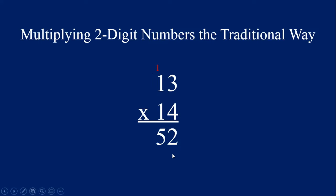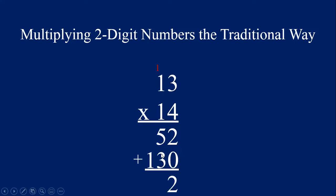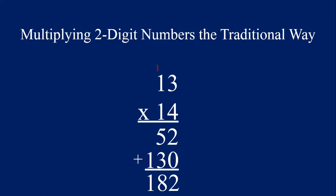Now we need to put a 0 under the 2 and move over to this 1 — we're in the tens place now, that's why we put that 0 there. We're going to multiply 1 by 13: 1 times 3 equals 3, and 1 times 1 equals 1. Now we have our second partial product. So we add 52 plus 130: 2 plus 0 is 2, 5 plus 3 equals 8, and 1 plus 0 equals 1. The answer is 182 — I was correct.